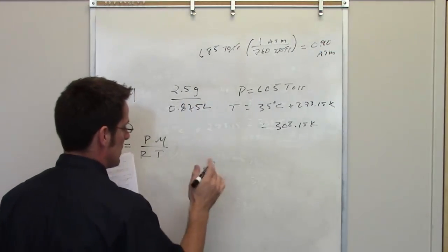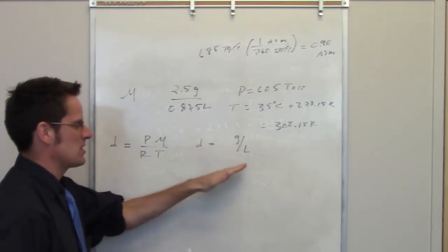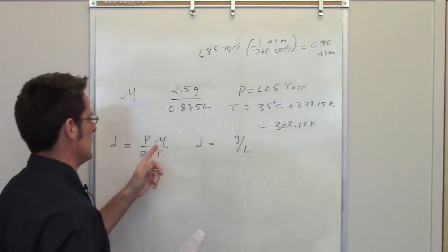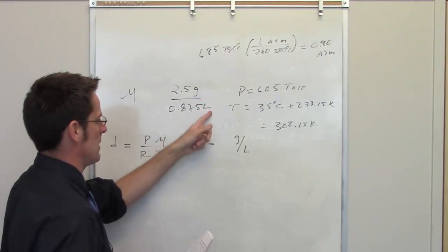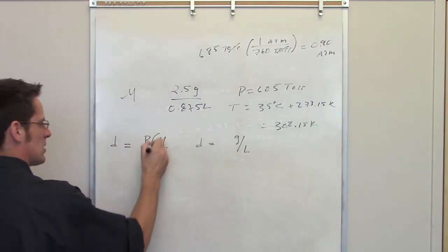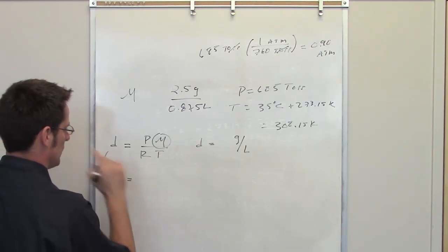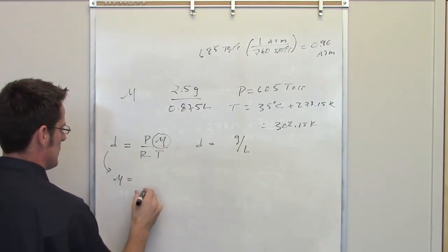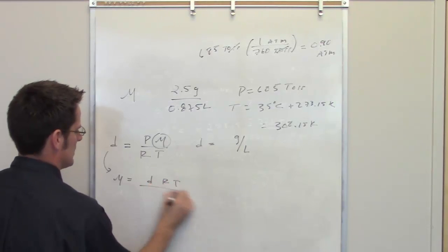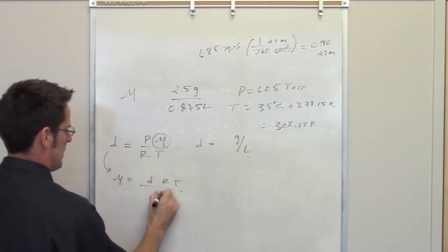Density, if you think about it, strictly speaking, it's any units of mass divided by volume. But conveniently, they've given us a certain number of grams, a certain number of liters. We're trying to solve for this value right here. So if I do algebra and rearrange everything, my molar mass is going to be equal to density multiplied by the ideal gas constant times temperature divided by P.